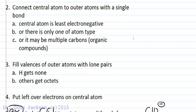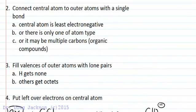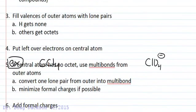Also if there's only one type of atom that's going to be the central atom, or if it's carbon in an organic compound, carbon loves to be the central atom at all times. After we connected our outer atoms to the central atom with a single bond, we're going to fill the valences of our outer atoms noting that H cannot get lone pairs and that the others will get a full octet.